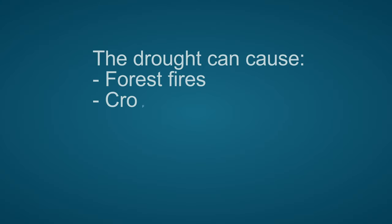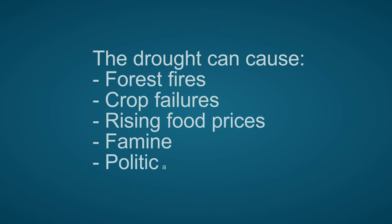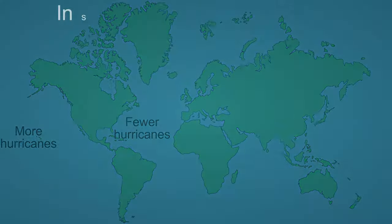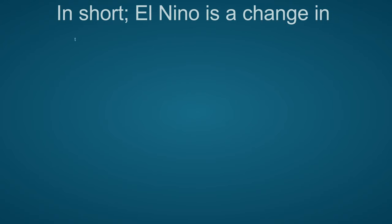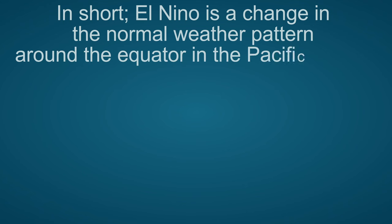Drought can cause fruit prices to rise and famine, which in turn can have political consequences. Furthermore, fewer hurricanes arise in the Atlantic during an El Niño, but the number of hurricanes in the Pacific Ocean increases because there is more heat and moisture in the atmosphere. In short, El Niño is a change in the normal weather pattern around the equator in the Pacific Ocean and has global effects.